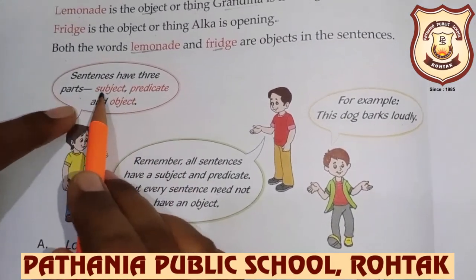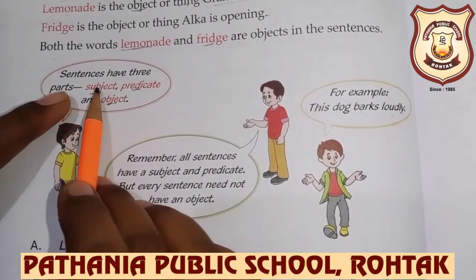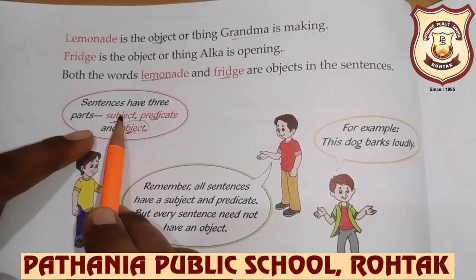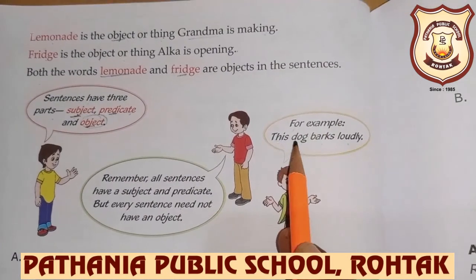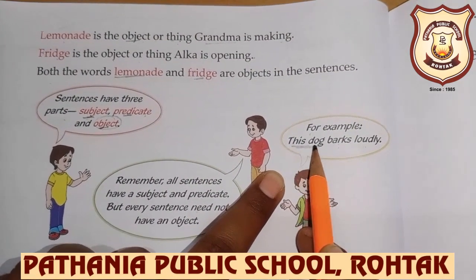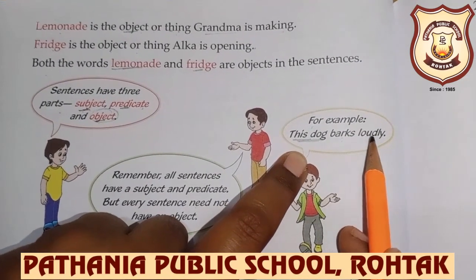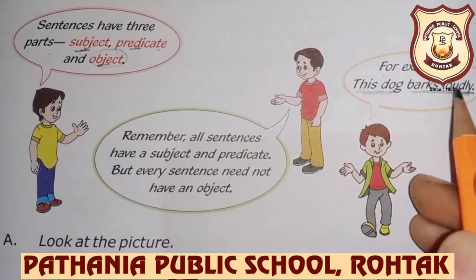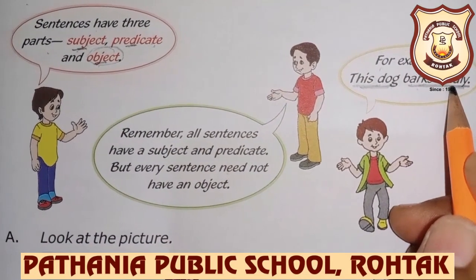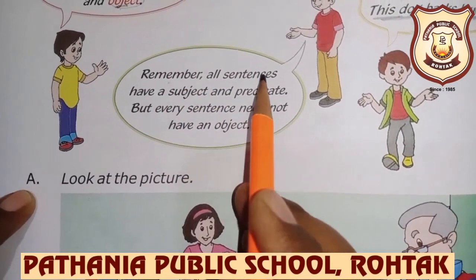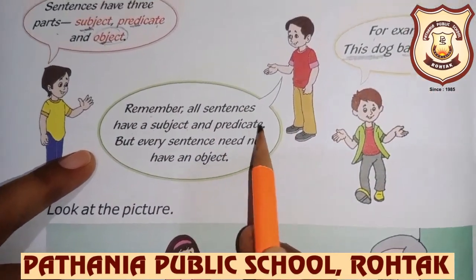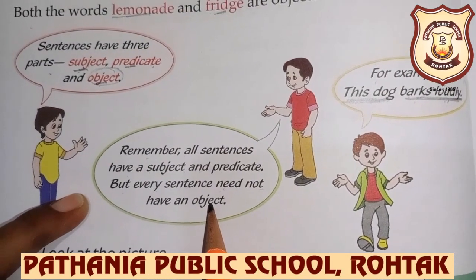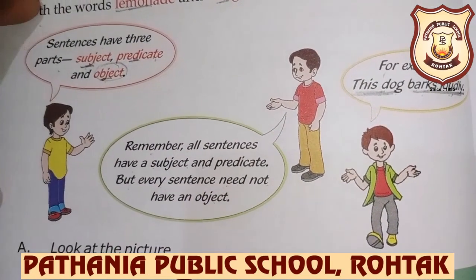A sentence has three parts: subject, predicate, and object. Basically humare paas subject and predicate hota hai. Object kabhi hota hai, kabhi nahi — every sentence need not have an object. For example: 'The dog barks loudly.' Subject is the dog. Predicate is 'barks loudly' — verb ke baad jo sentence hota hai use hum keate hain predicate. Remember, all sentences have a subject and predicate, but every sentence need not have an object.